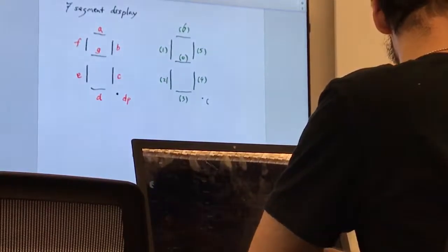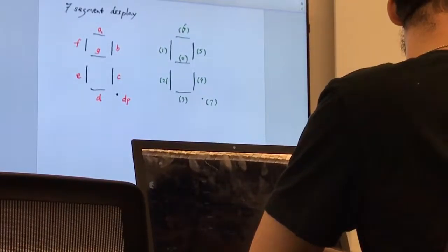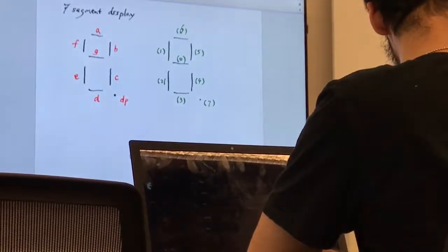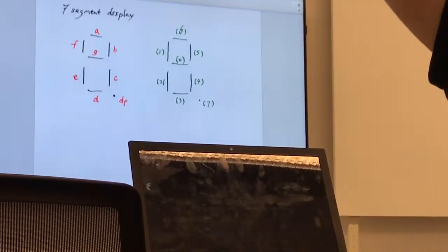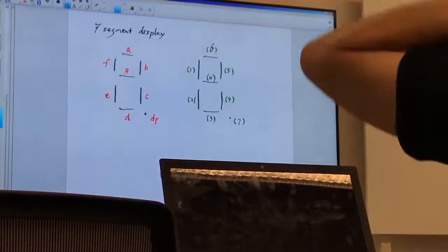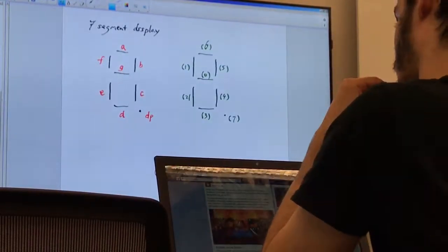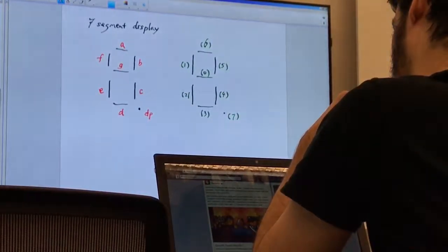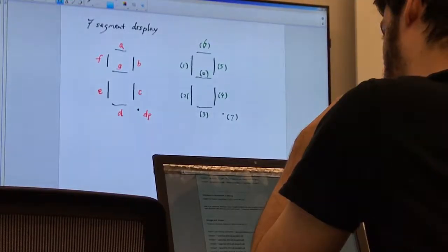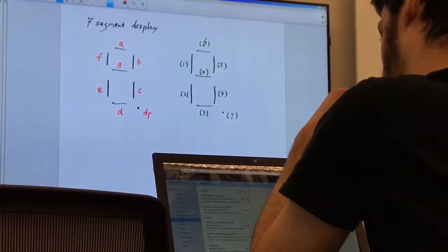And number 7 is not changing because we don't need to deal with the decimal point. We don't have to deal with number 7 at all because it's a constant, always high or low. We'll figure out high or low.